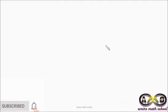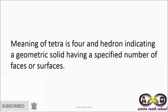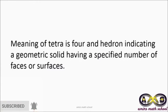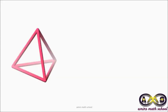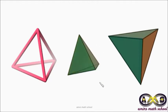Now we are going to discuss a very special geometric shape: the tetrahedron. The meaning of 'tetra' is four, and 'hedron' indicates a geometric solid having a specified number of faces or surfaces. So a tetrahedron is a geometric solid having four faces. Here you can see a tetrahedron — all four faces are triangles, one, two, three, and four.